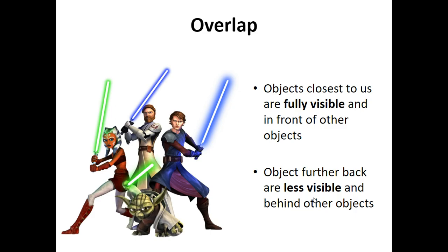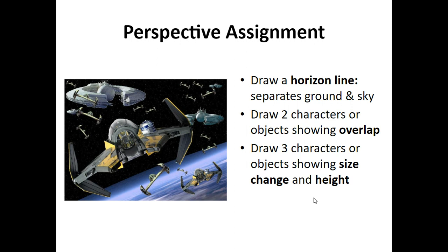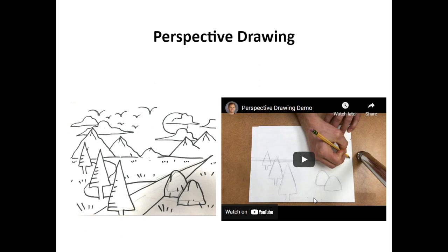So really consider overlap as well as size change. For your perspective assignment, you're going to be drawing a horizon line, which is the separation from the ground and the sky. You're going to draw two characters or objects showing overlap, and you're also going to be drawing three additional characters that show size change. I would recommend you watch the linked video in the presentation and assignment to help you with the details of this activity.